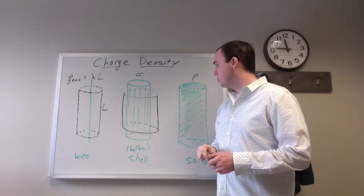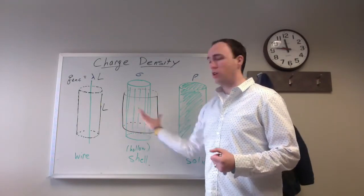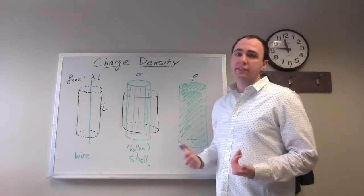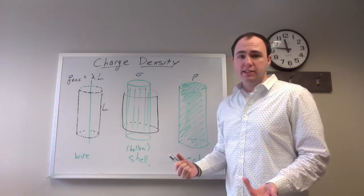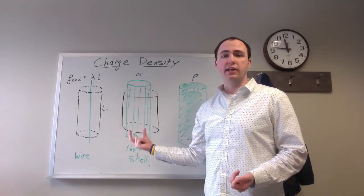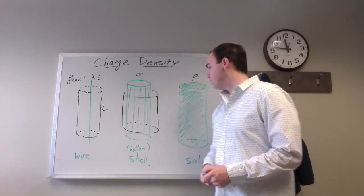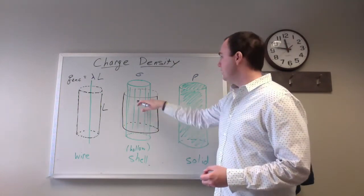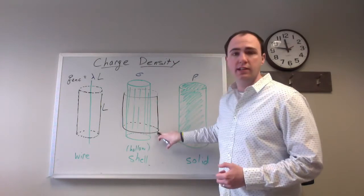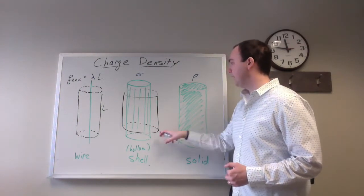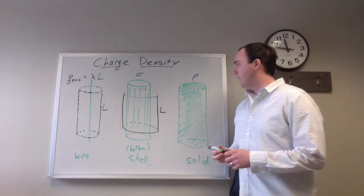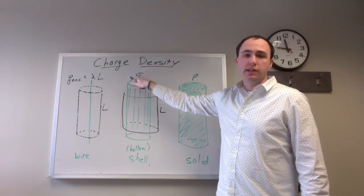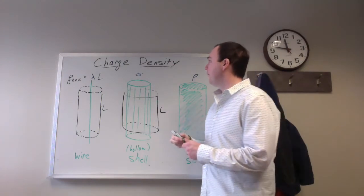Here with the hollow shell, I've drawn my Gaussian surface assuming I'm looking at a point outside of the hollow shell. Because if I were inside the hollow shell — it's hollow — I'd be drawing a Gaussian surface that encloses no charge, so that one's really easy. But if we're outside, then I need to figure out how much of the surface area is being enclosed by this Gaussian surface drawn here in black. You have an arbitrary L drawn there, but you can't just multiply sigma, the surface charge density, times the length — it won't give you the total charge. You need to multiply it by an area.